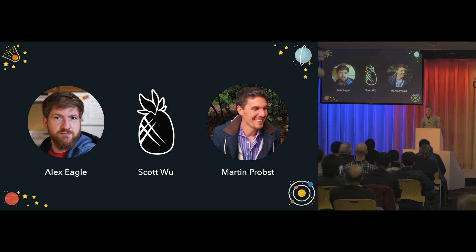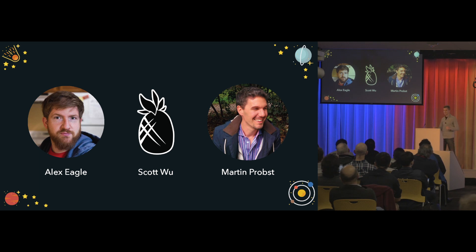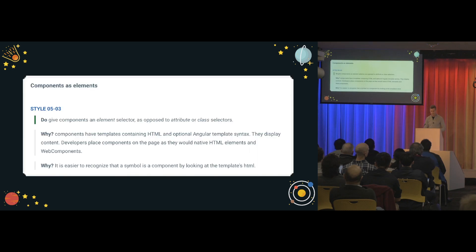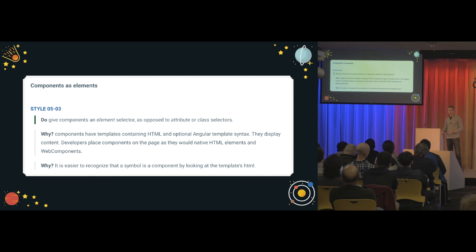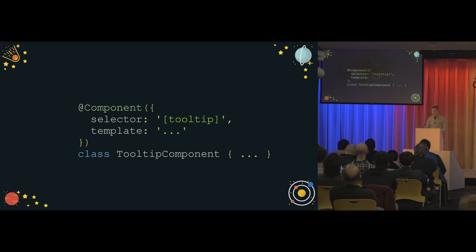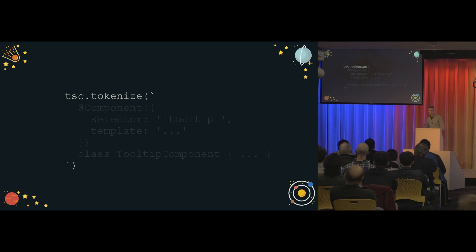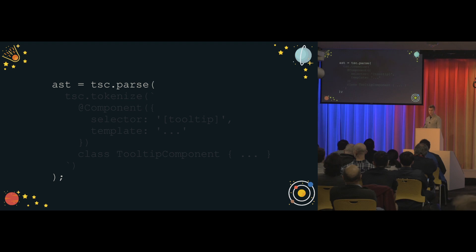Here is how one of the rules in Colalyzer works — this rule verifies that the selector of a given component follows specific guidelines, specifically that component selectors are type elements. Given a component that doesn't follow the style guide, the first thing we do is perform lexical analysis using TypeScript to get the individual tokens, then pass them to the parser. Right after that, we get the AST — this piece of code, this string, is turned into a tree.